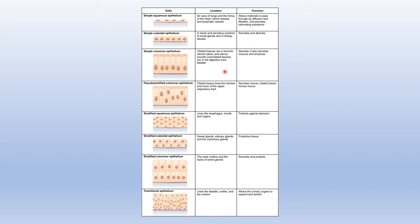This table lists the different categories of epithelial tissue — the simple types, the pseudo-stratified columnar, and the various stratified types — giving examples of where you may find them and what part of their function is.